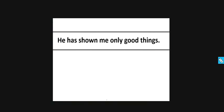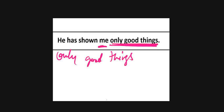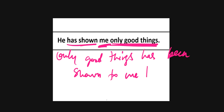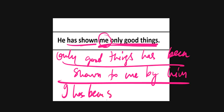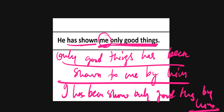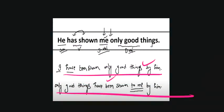Next example: 'He has shown me only good things.' To make passive: 'Only good things have been shown to me by him.' Alternatively, using 'I' as subject: 'I have been shown only good things by him.' Both forms are correct passive transformations of this sentence.